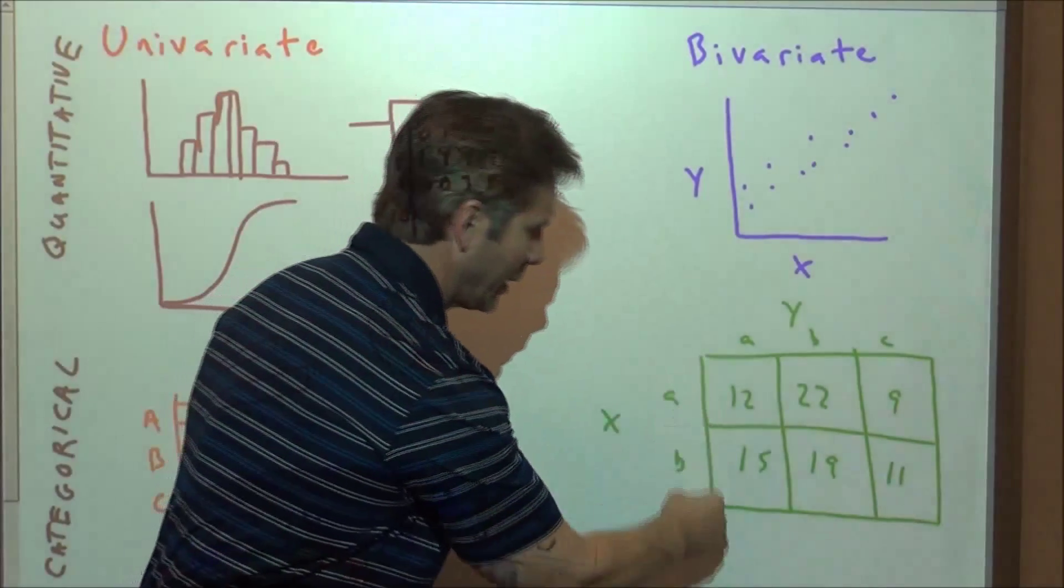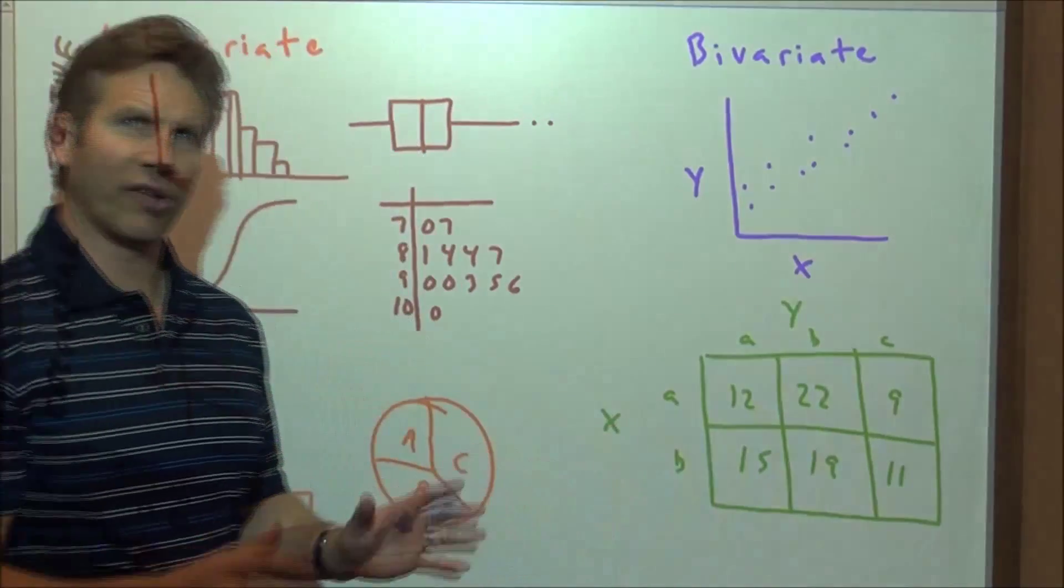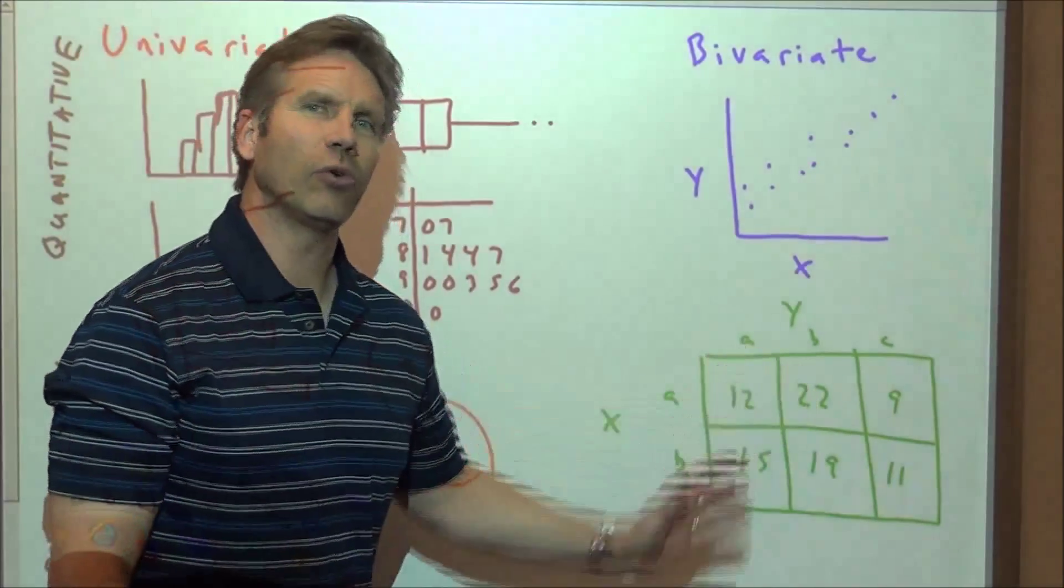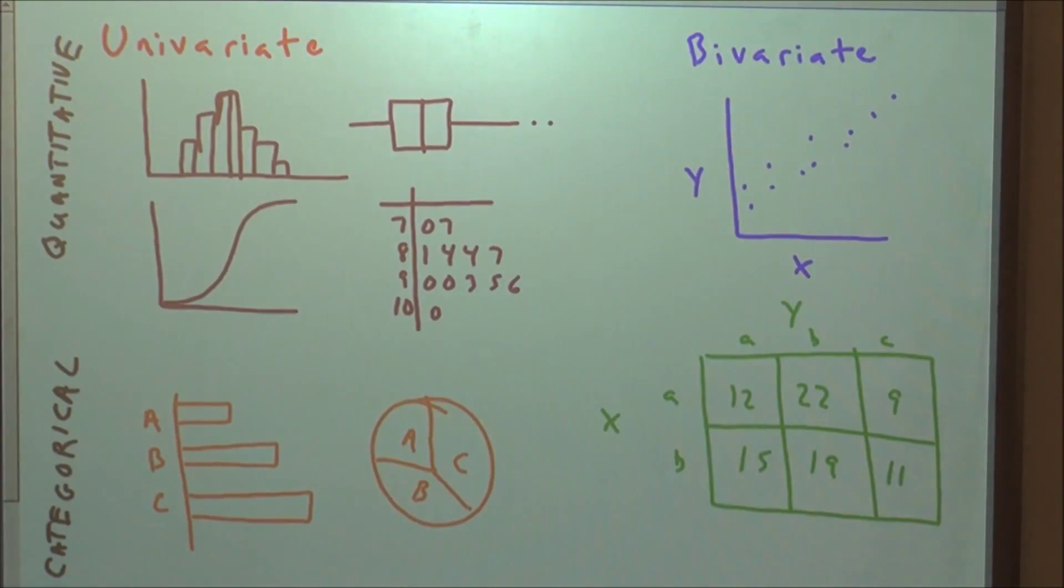we're going to display the data from combining those two variables, categorical variables, with a two-way table. Again, we'll get more to that later. This is what we're dealing with in this first unit.